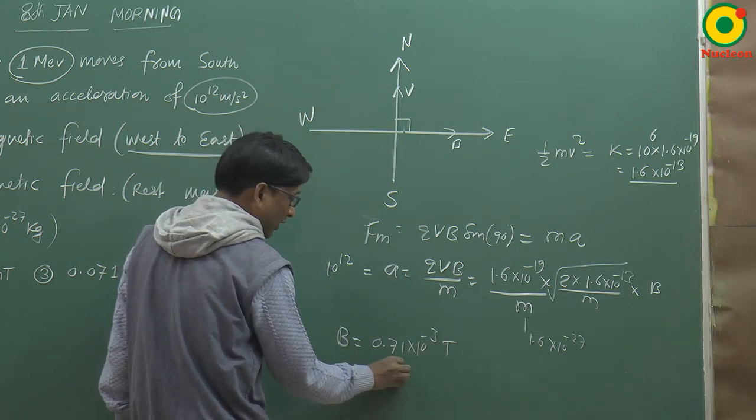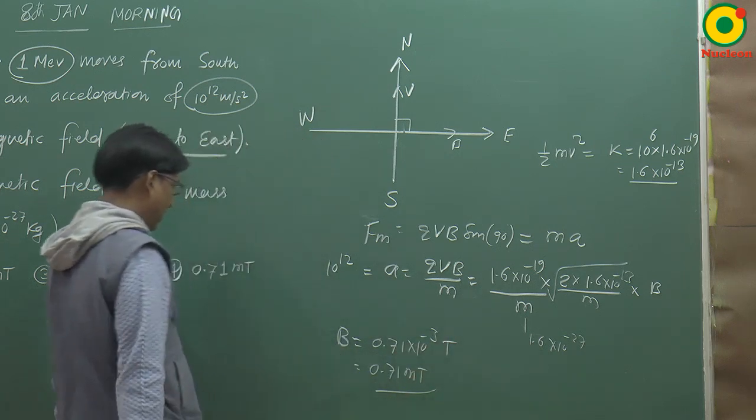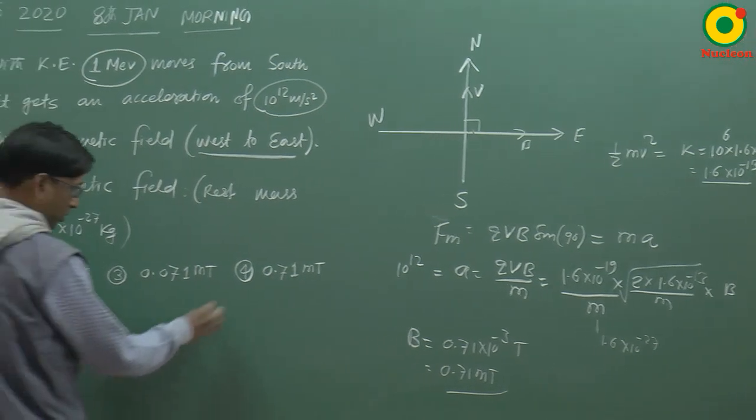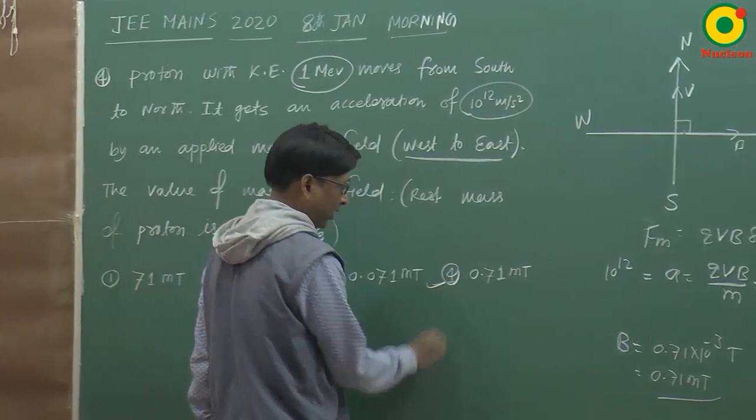Matlab 0.71 mili tesla aayega. Tho dekhenge fourth option joh hai, yaha correct option.